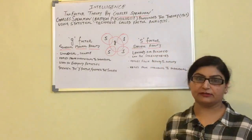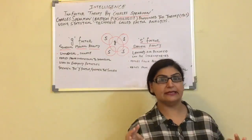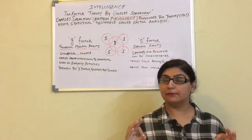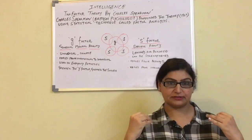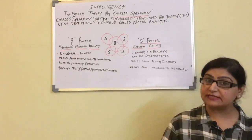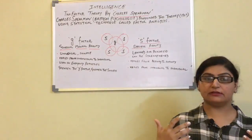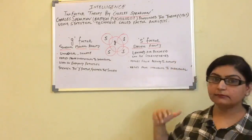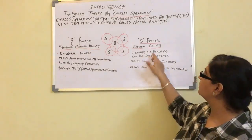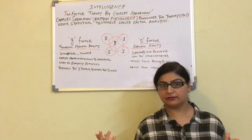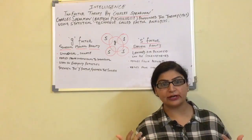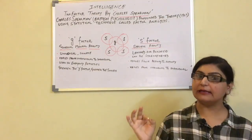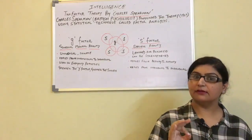Now we come to S-factor. S-factor is the specific ability or specific talent that you possess. It differs from person to person — your S-factor is different, my S-factor will be different. It includes specific interests and tastes that you have. It is learned and acquired — unlike G-factor, with your experiences and exposure in life, you come to understand that you have a particular interest in a certain area and can do well in that subject or field.